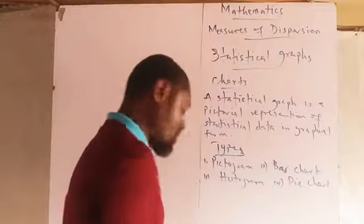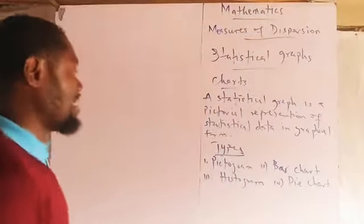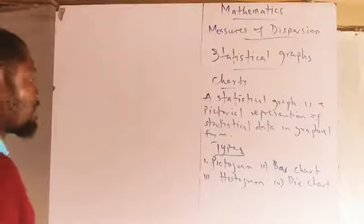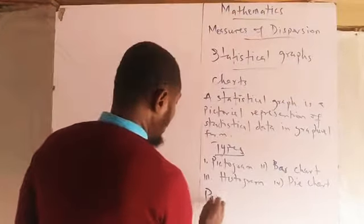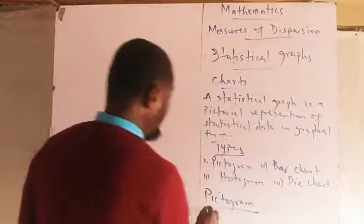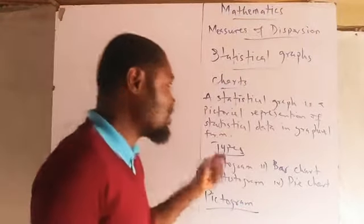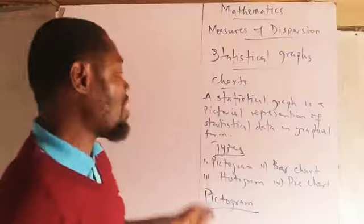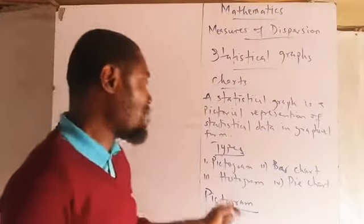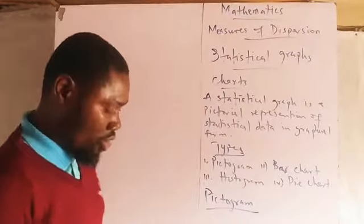We are going to treat all of these in our class in the course of learning statistical graphs. Now let's look at the pictogram. These are the types of statistical graphs: the pictogram, the bar chart, the histogram, and the pie chart. Let us look at the pictogram.